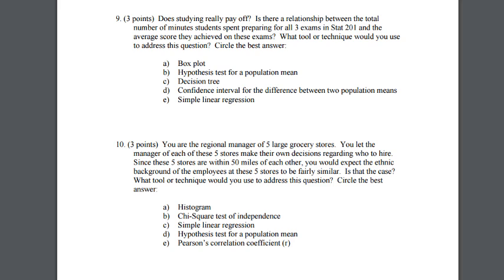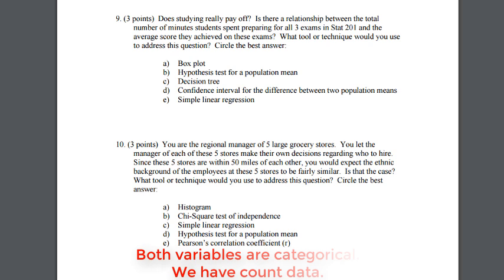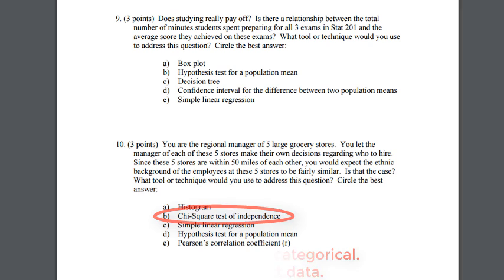For the next question, we are looking at five different large grocery stores and they want to collect data on the ethnicity of the person they hire. The specific questions being asked are: what store do you work at, and what is your ethnicity? These are two categorical questions, which gives us count data. Since it's two categorical questions, we would actually be doing a chi-squared test of independence.